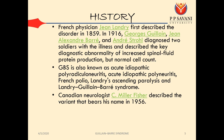French physician Jean Landry first described the disorder in 1859. In 1916, George Guillain, Jean Alexandre-Barré, and Andres Strohl diagnosed two soldiers with the illness and described the key diagnostic abnormalities of increased spinal fluid protein production but normal cell count. GBS is also known as acute idiopathic polyradiculoneuritis — acute, happening in a short period; idiopathic, without any known cause; poly, involving many nerves — or acute idiopathic polyneuritis, French polio, Landry's ascending paralysis, and the Landry-Guillain-Barré syndrome.